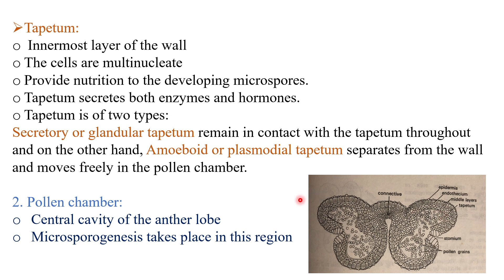Then there is the pollen chamber. The central cavity of the anther lobe is known as the pollen chamber, and microsporogenesis takes place in this region. This is all about the structure of the anther.